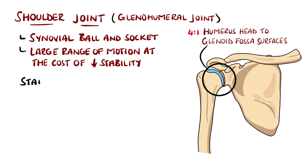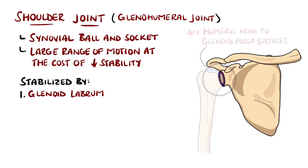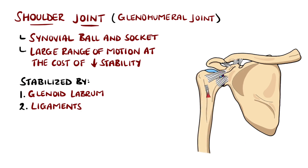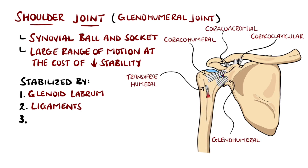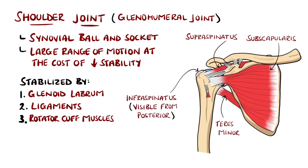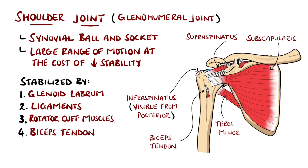The joint is stabilised by surrounding structures. The glenoid labrum is a ring of fibrocartilage around the glenoid fossa that better anchors the humerus and glenoid, and there are also a number of ligaments. The four muscles of the rotator cuff also stabilise the shoulder, including the supraspinatus, infraspinatus, teres minor, and subscapularis. The biceps tendon also has some stabilising depressive effect on the humerus.